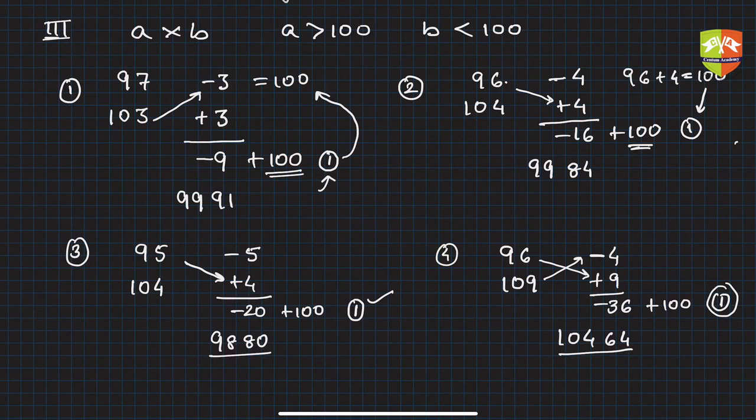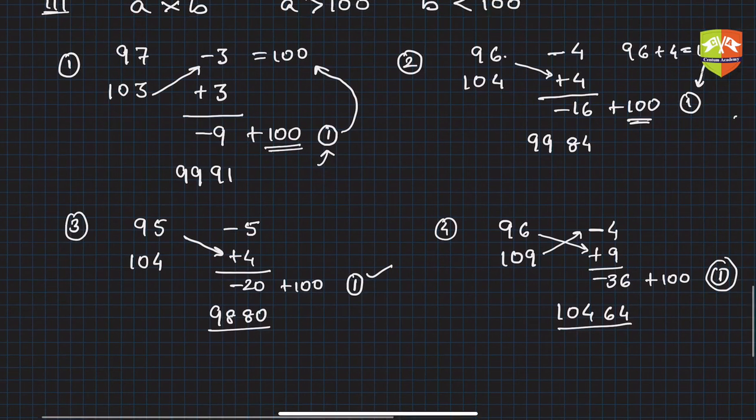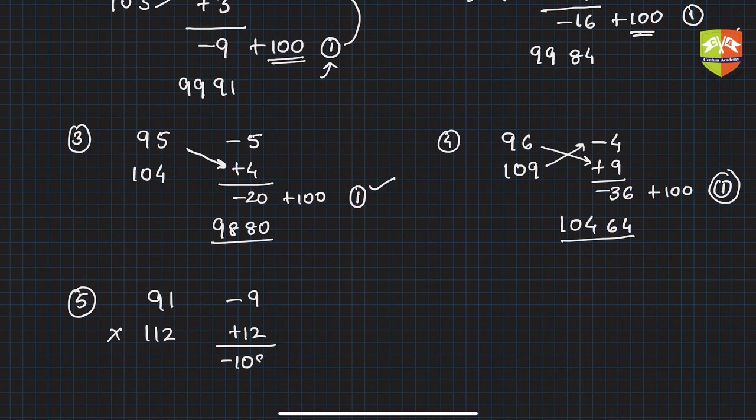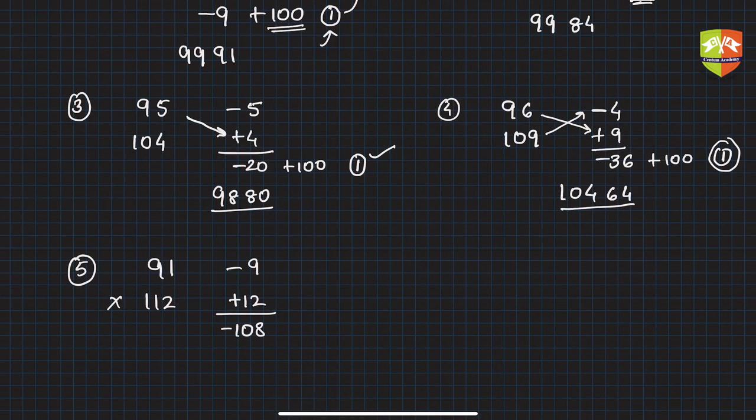Now, what happens if the number to be added is more than 100? Let's take an example. I'm doing 91 into 112. 91 is 9 away, and 112 is 12 away. 12 times 9 is 108—minus 108. If you add 100, it'll still be negative, so you have to add 200.